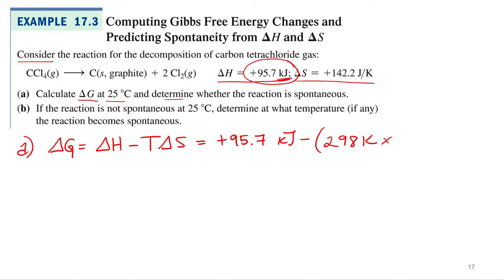If my delta H is in kilojoules, and it's usually reported in kilojoules, and my delta S is only in joules, and it is usually reported in joules, I've got to make them match so I can add and subtract them, right? 0.142.